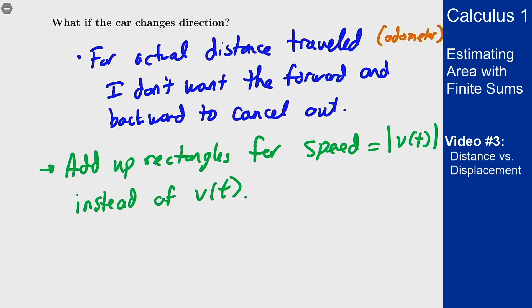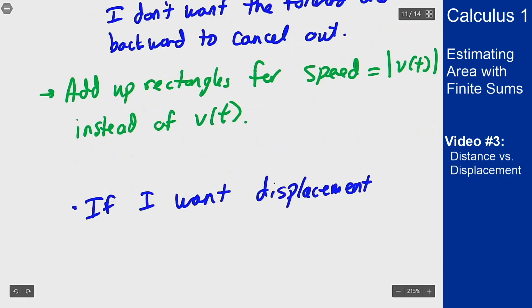If I don't want distance traveled, I actually just want displacement, which is just where did I start, where did I end, how far apart are those two places, then I can just use v(t).